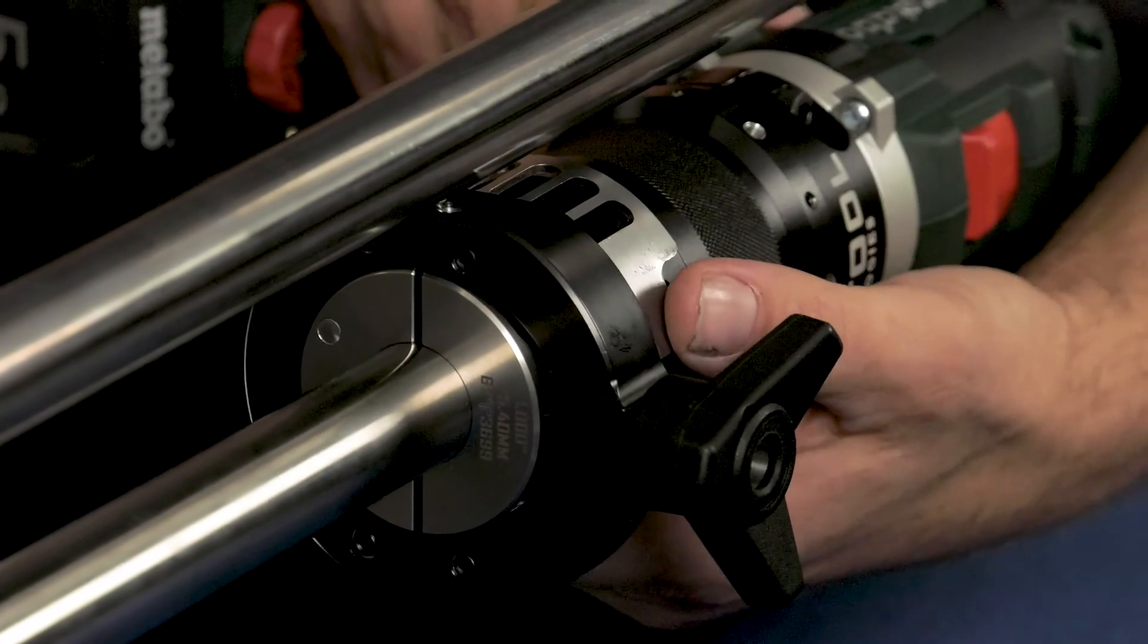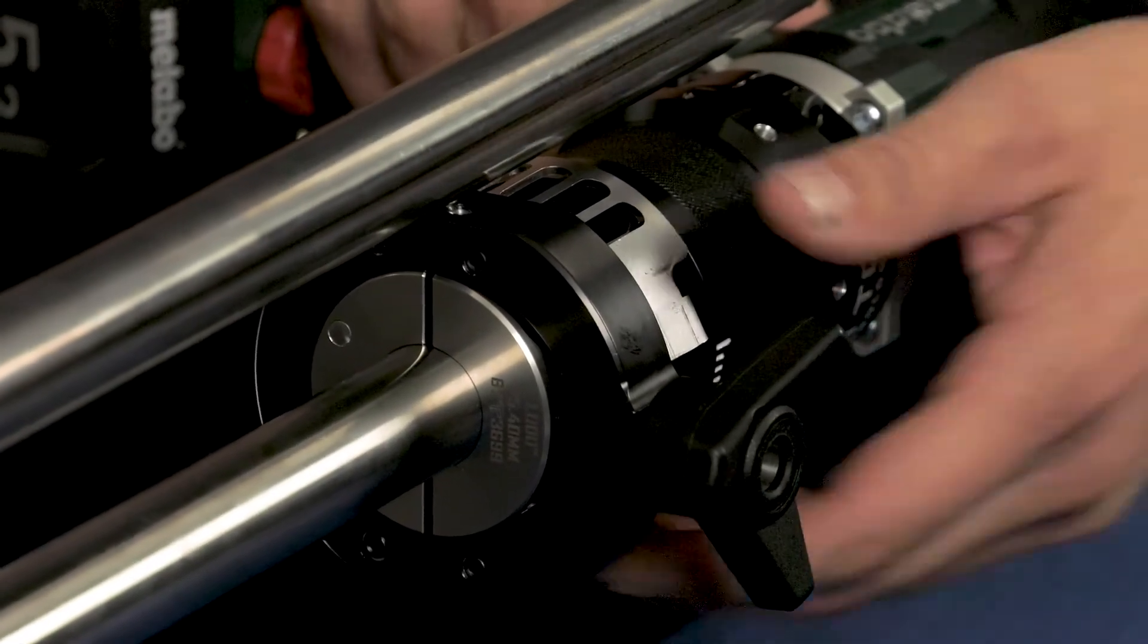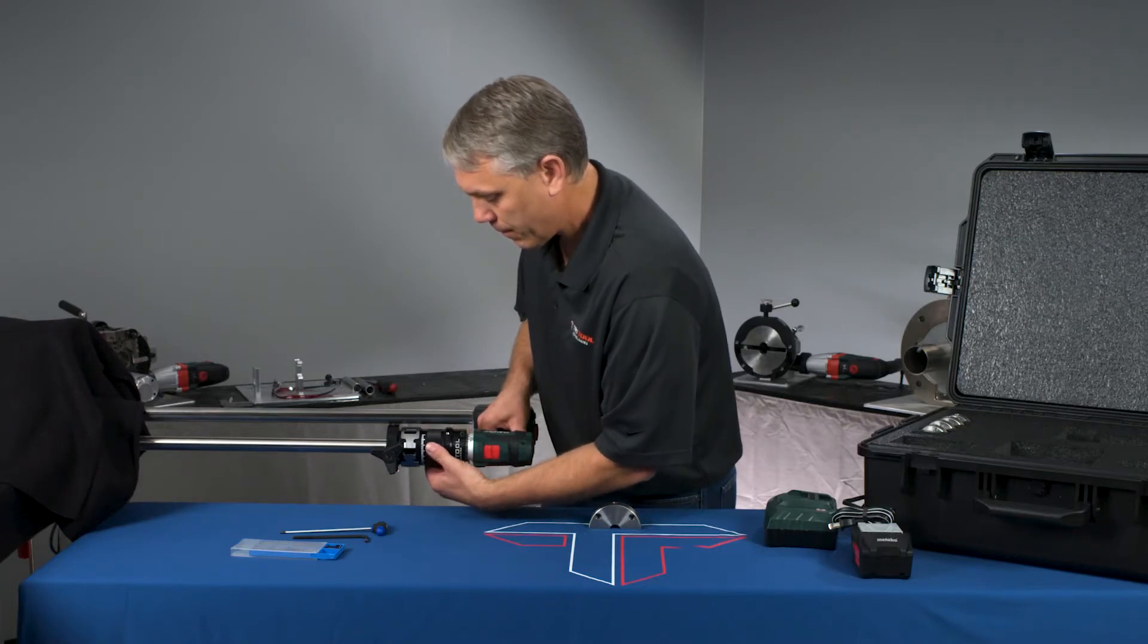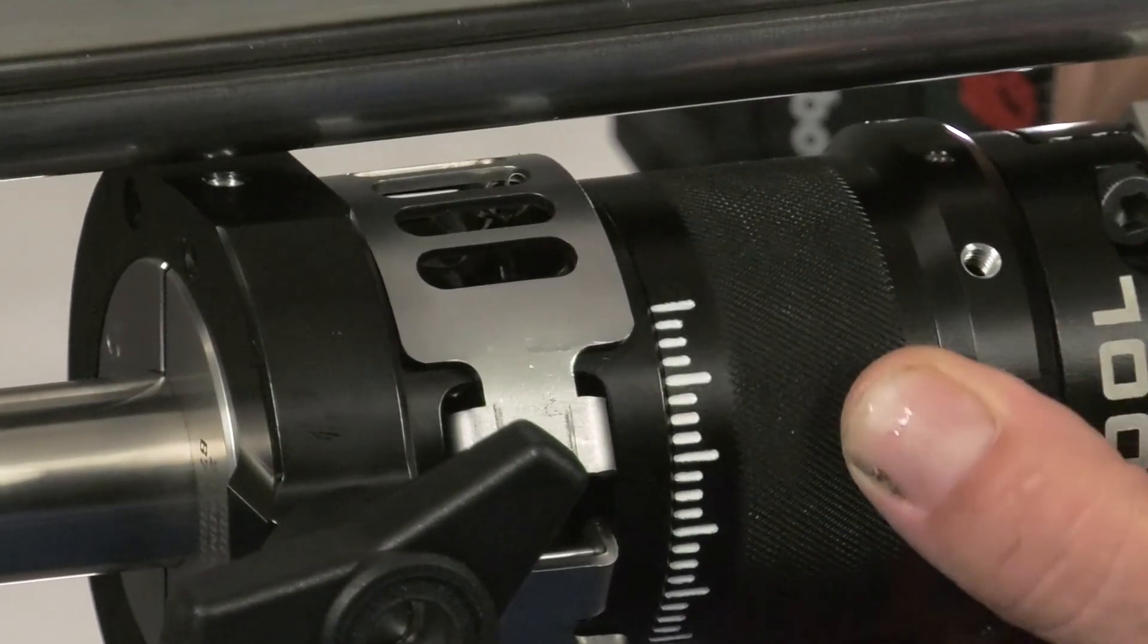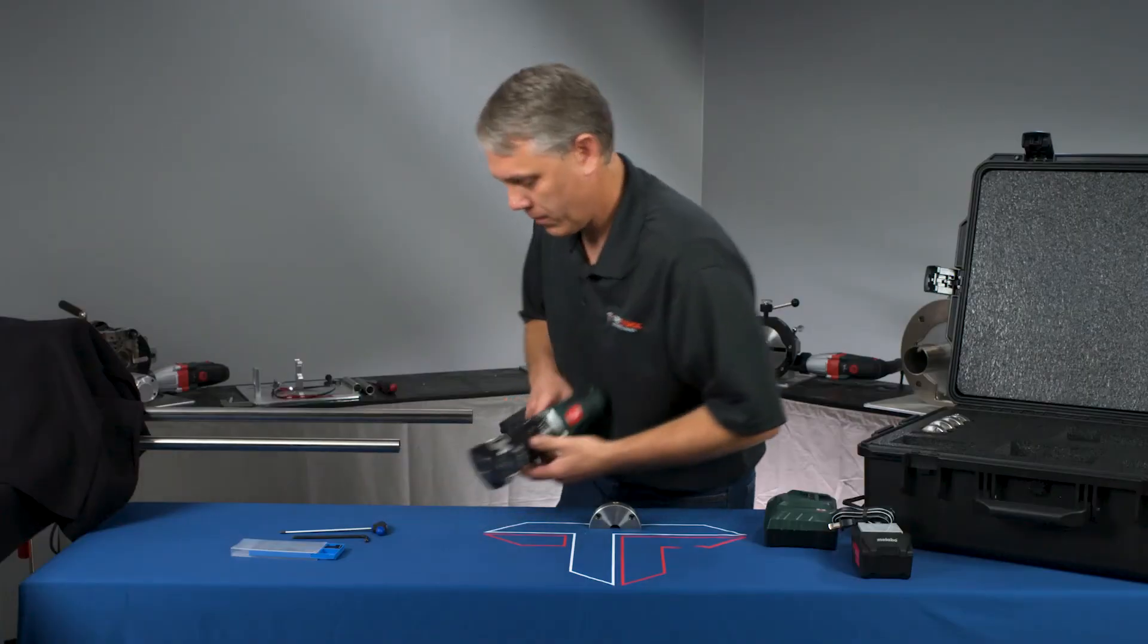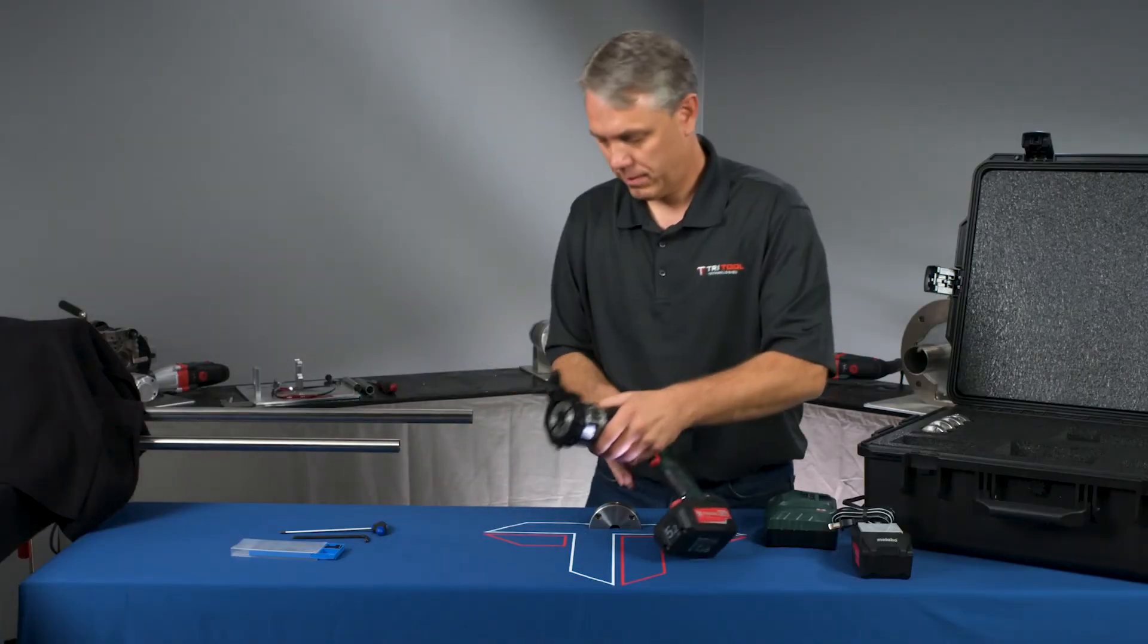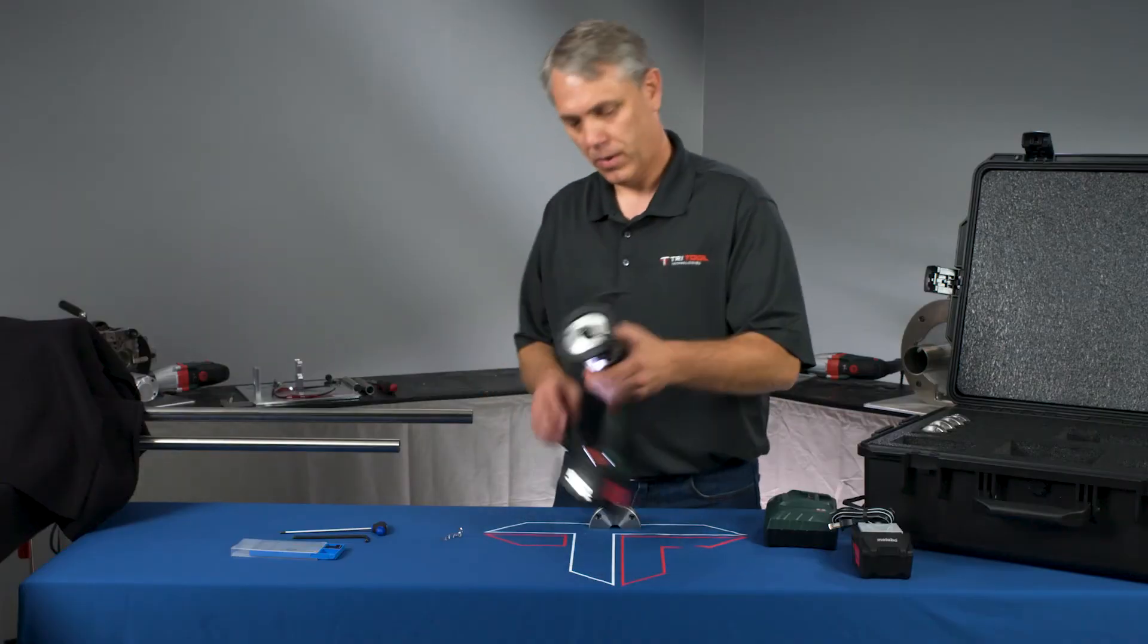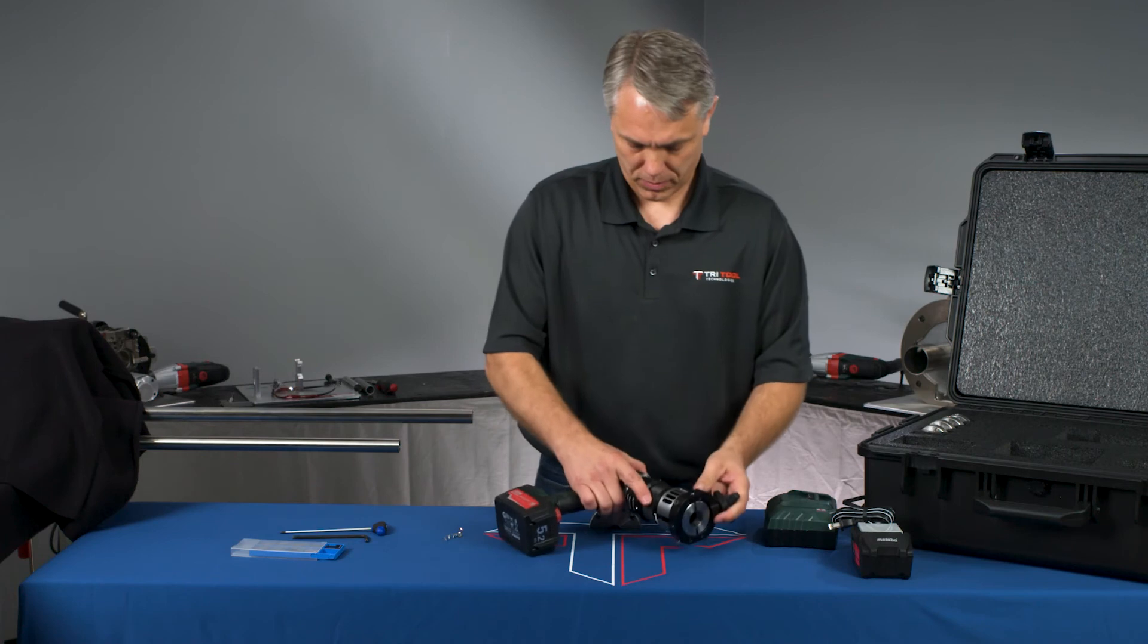Now we're ready to surface the pipe. As quick as that, the tube has been machined. Clear out the chips. Ready to go.